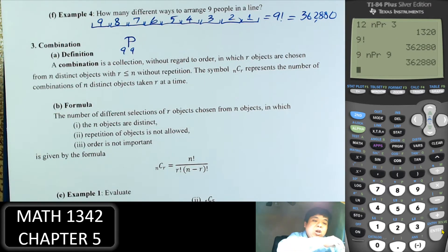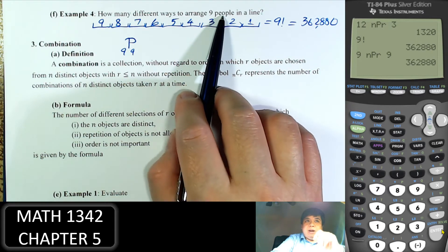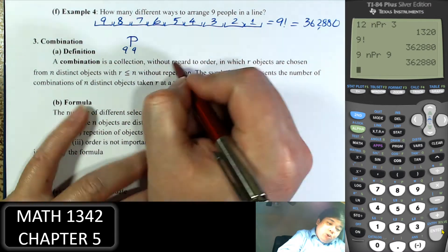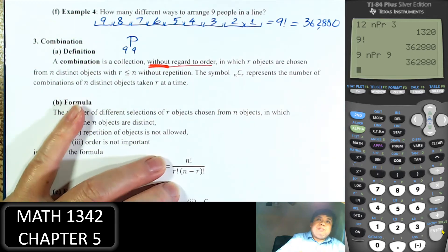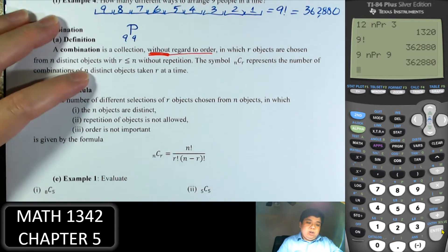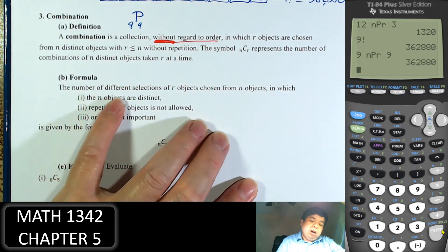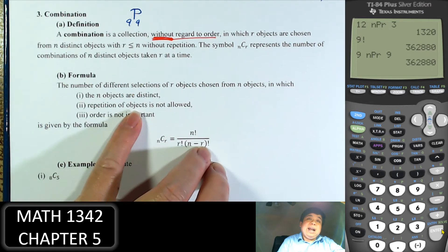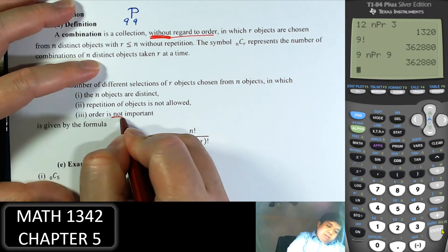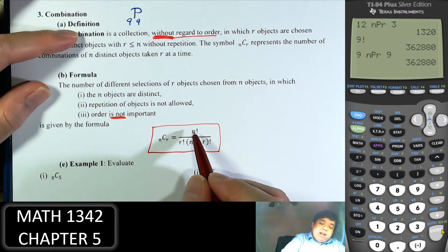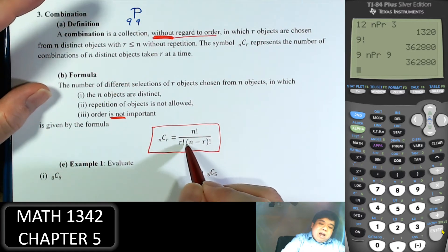Permutation is when order does matter — that's very important. What's next is combination. Combination is a collection without regard to order. The number of different selections of r objects chosen from n objects where objects are distinct and cannot be repeated — these two conditions are the same as permutation. The difference is the order is not important, so the formula is nCr equals n factorial over r factorial times (n minus r) factorial.